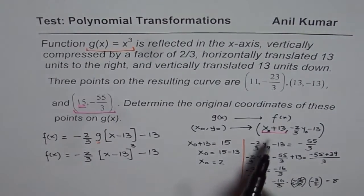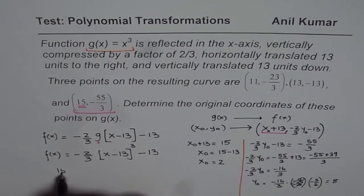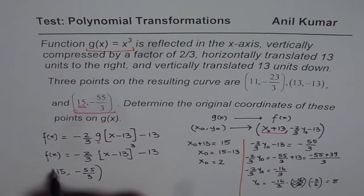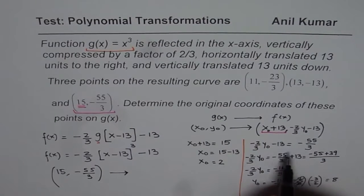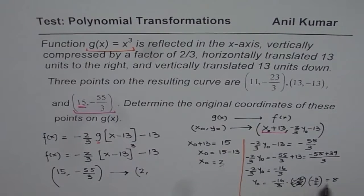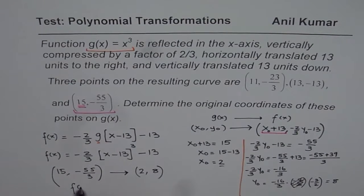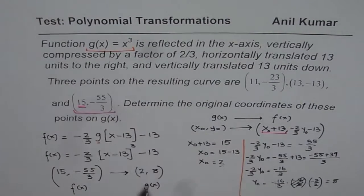So our answer is that the transformed point (15, -55/3) on f(x) corresponds to the original point (2, 8) on g(x). We can verify this: 2³ = 8, which confirms the answer is correct.